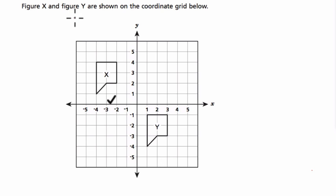I'm going to start by reading the question. Figure X and Y are shown on the coordinate grid below. I don't know why this check mark is here. Sorry about that. That's just an anomaly. And I notice we've got X, we've got Y.